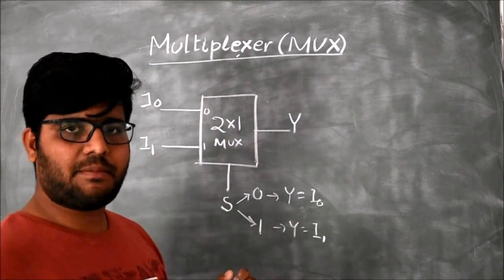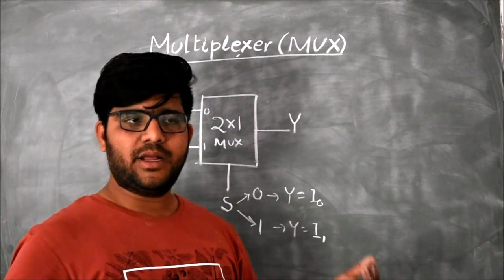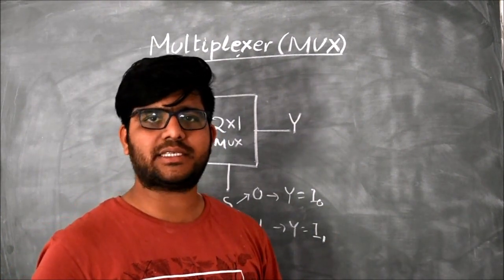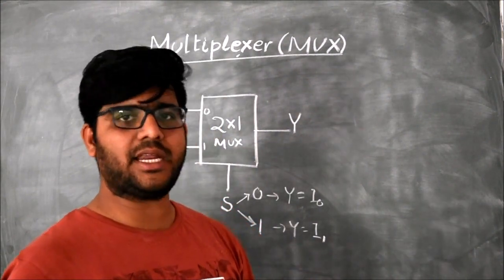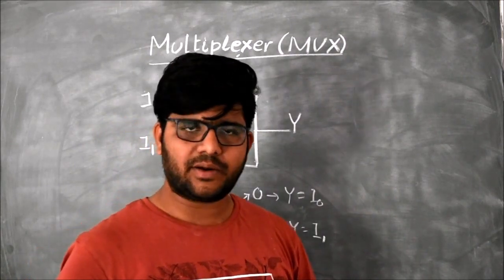Multiplexer is a combinational circuit having many inputs and one output. The inputs are routed to output using some selection lines. And the multiplexer is the best circuit to design each and every kind of combinational circuit.